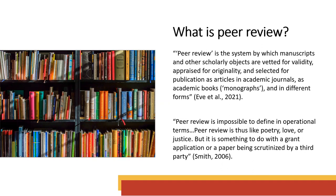Eve et al., in their book on peer review, define it this way: peer review is the system by which manuscripts and other scholarly objects are vetted for validity, appraised for originality, and selected for publication as articles in academic journals, as academic books, monographs, and in different forms. This definition is really broad, covering different contexts and different scholarly objects, because it attempts to define something practiced in a variety of contexts for a variety of scholarly objects.